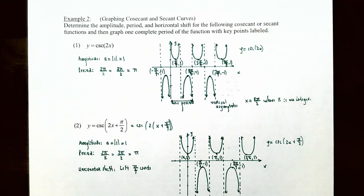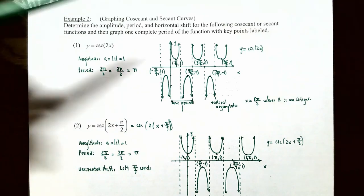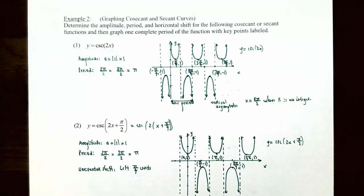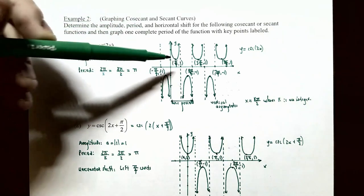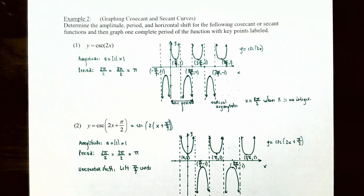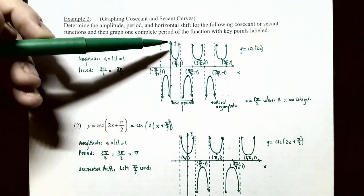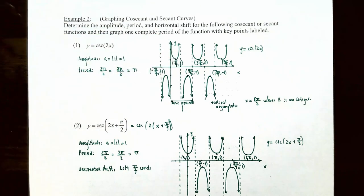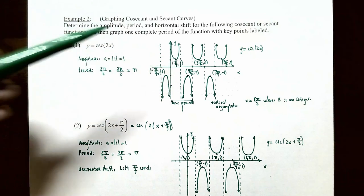Rather than vertical asymptotes at multiples of π as with the standard cosecant, because the period is now π radians, you'll have vertical asymptotes at x equals kπ/2 where k is an integer — at x equals 0, π/2, π, 3π/2, and so on. We'll graph one complete period between x equals 0 and x equals π. On the right side of x equals 0, the graph increases without bound, and on the left side of x equals π/2, the graph also increases without bound. The graph goes no lower than y equals 1 at x equals π/4. This is the shape between x equals 0 and x equals π/2.